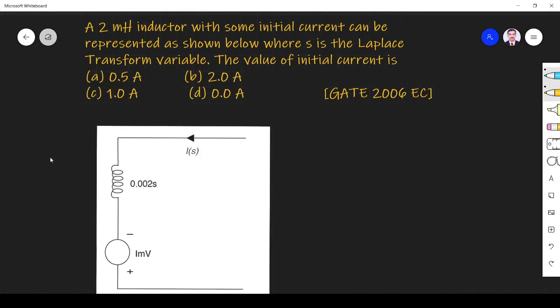Hi friends, let us see a transient response related question asked in GATE 2006 ECE paper. The question is: a 2 mH inductor with some initial current can be represented as shown below where s is the Laplace transform variable.